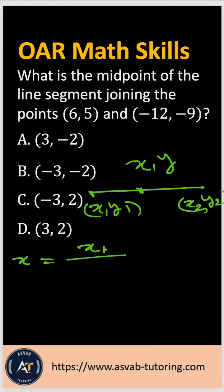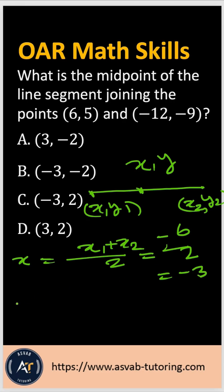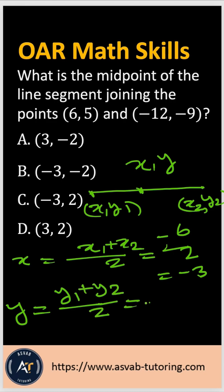Plugging in the values gives you 6 plus (-12), which is -6, divided by 2, equal to -3. Then the y-coordinate will be y1 plus y2 over 2. Plugging in the values gives you 5 plus (-9), which is -4, divided by 2, equal to -2.